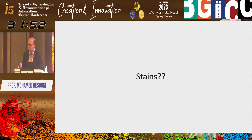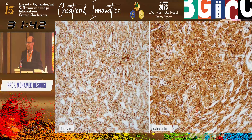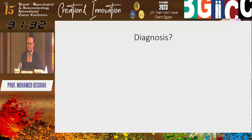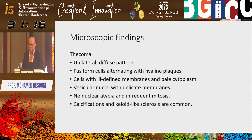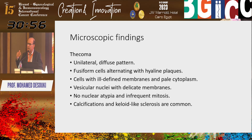Do you need any stains? Reticulin would be good. The two stains I keep mentioning — inhibin and calretinin — are both strongly positive in this case. So the diagnosis is luteinized thecoma. Thecoma: unilateral, diffuse pattern, fusiform cells alternating with hyalinized plaques like fibroma, but cells have ill-defined borders and pale conspicuous cytoplasm, vesicular nuclei with delicate membranes, no atypia, infrequent mitotic figures, and calcifications are common.